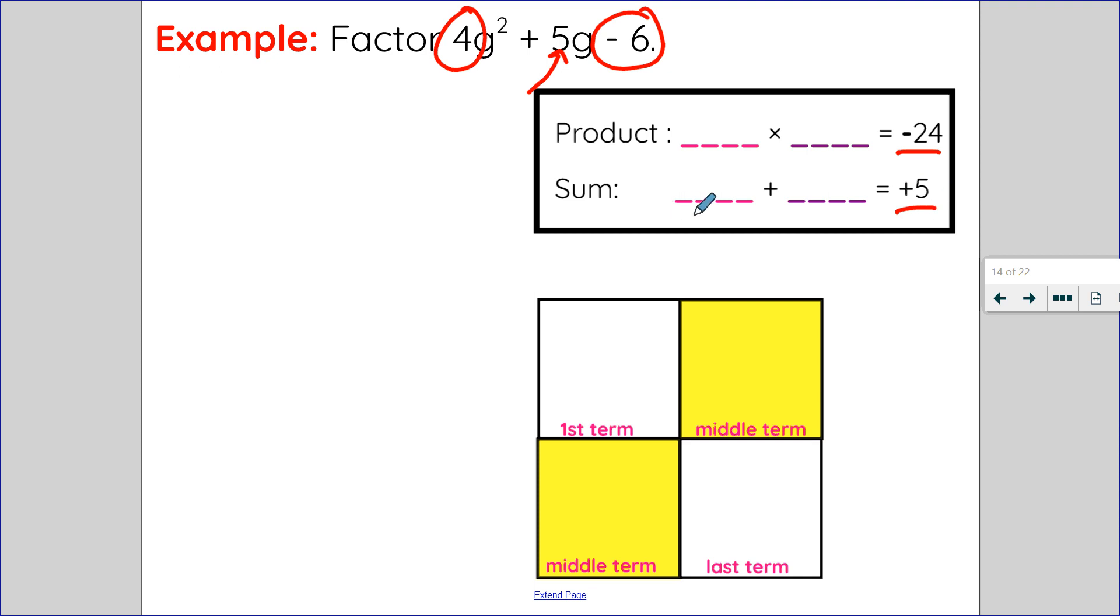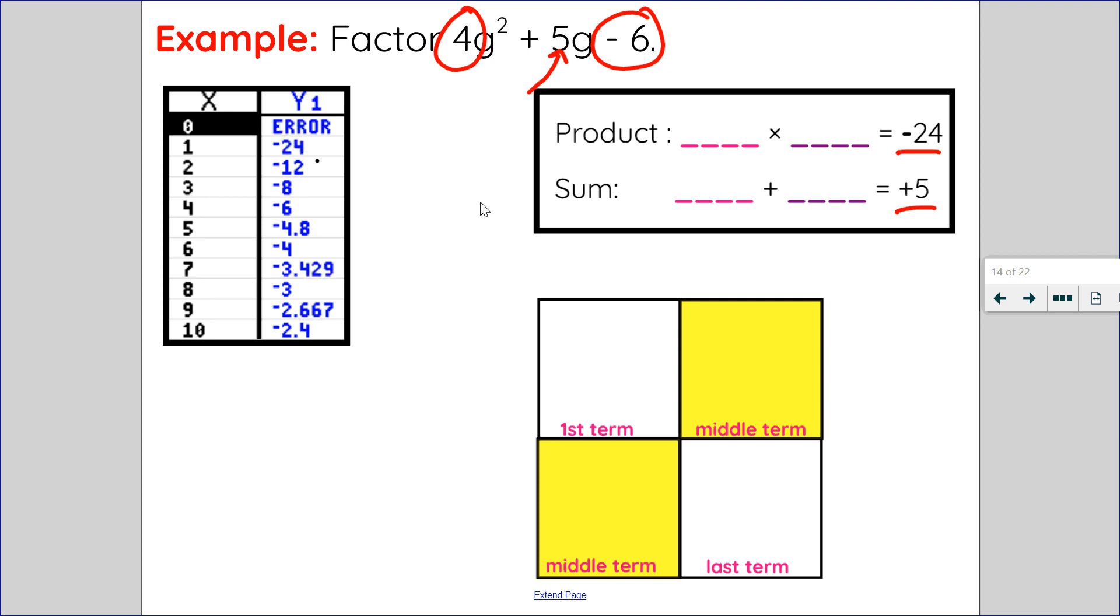So I can list out all the products myself, or I can just go to my graphing calculator and enter it in. So in my graphing calculator, I enter in y1 negative 24 divided by x, and then I go into the table and see all the factor pairs.